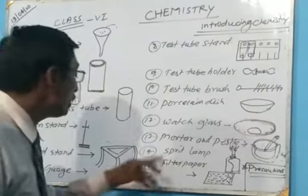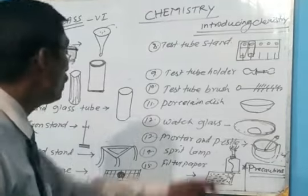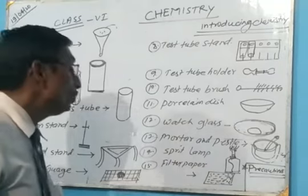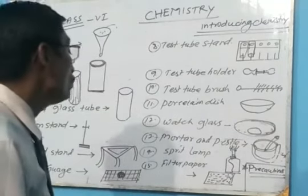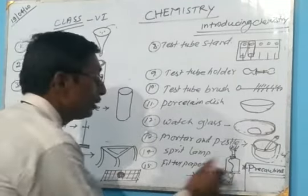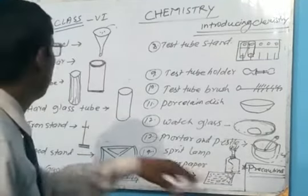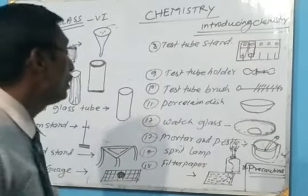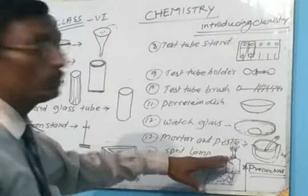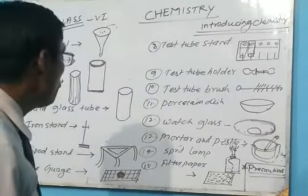A spirit lamp is the most important burner which is used for heating any substance. We can use other gas lamps also, but the spirit lamp is the most common lamp. We keep spirit into it and then we do not need any type of gas. We can heat any substances with it and it makes the process easy. So it is also an important apparatus.